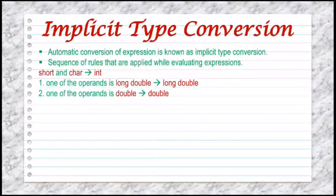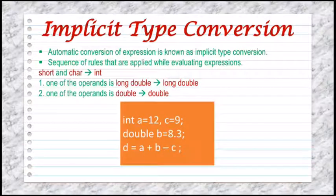Rule two: else if one of the operands is double, the other will be converted to double and the result will be double. In the example, we have declared a and c as integer and b as double. After calculating, the answer will be converted to double.